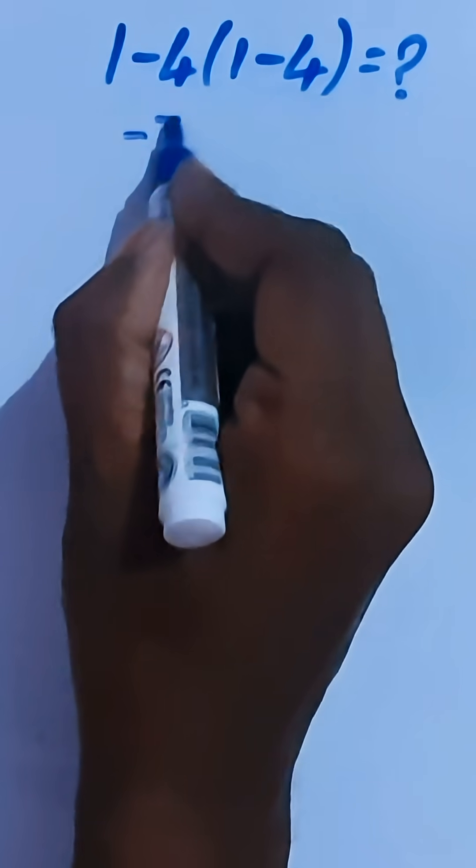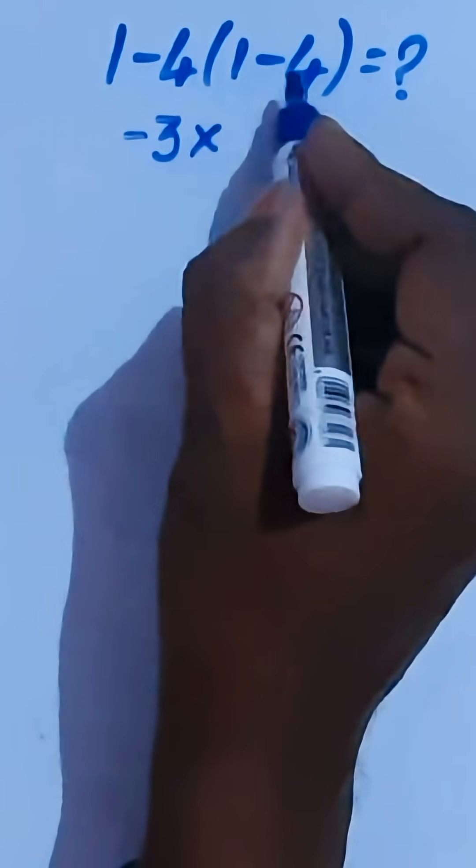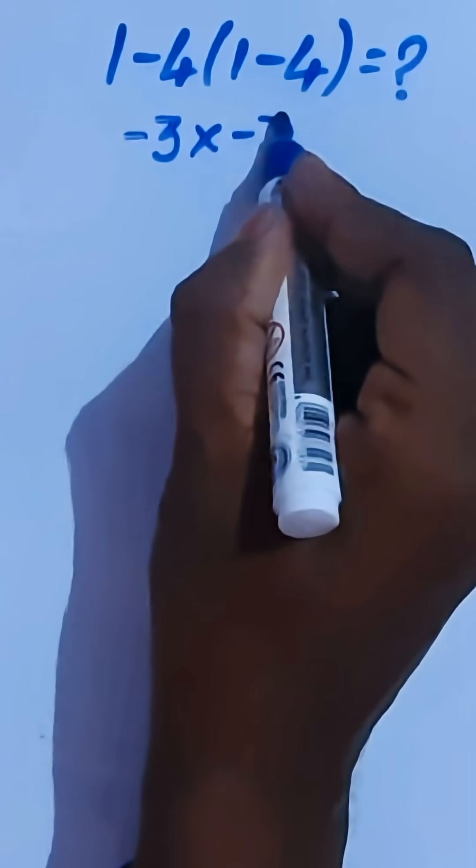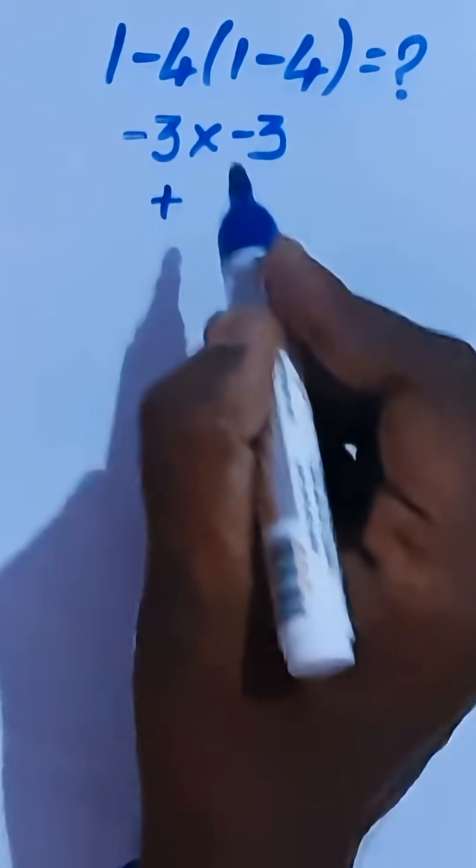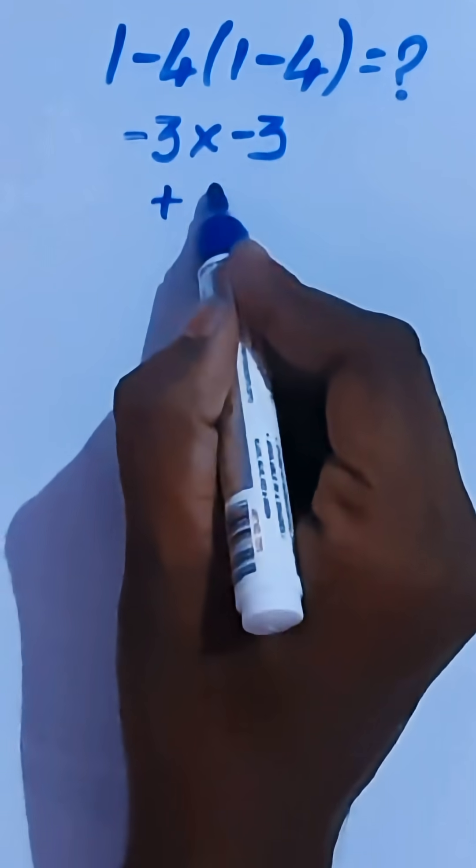Hi guys, here 1 minus 4 is minus 3 times. Here 1 minus 4 is minus 3. Here minus into minus is plus, 3 times 3 is 9.